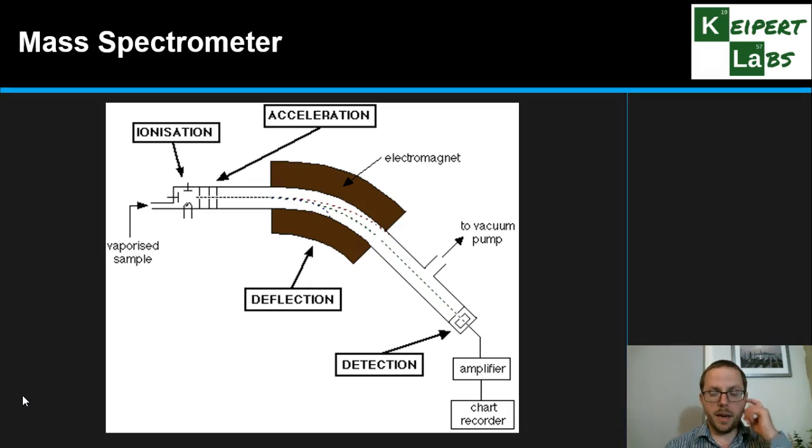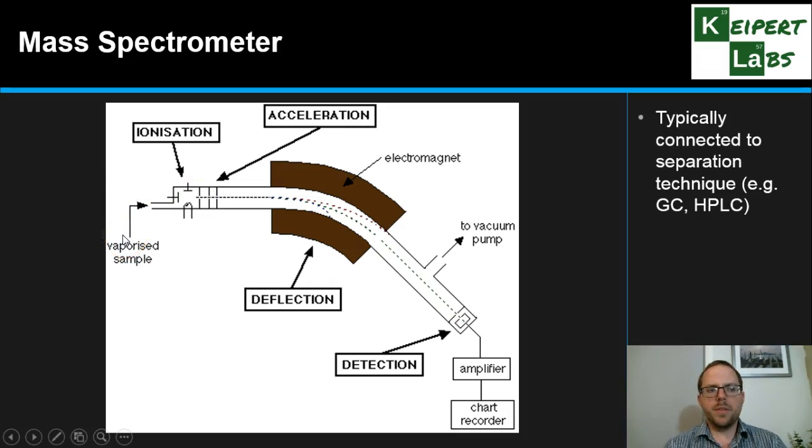Let's start by looking at this diagram of how a mass spectrometer is put together. On the left-hand side, we have where the vaporized sample enters. Typically, a mass spectrometer is connected to a separation technique like gas chromatography or high-performance liquid chromatography (HPLC), but it doesn't have to be. You can directly analyze the sample as long as it forms a vapor.